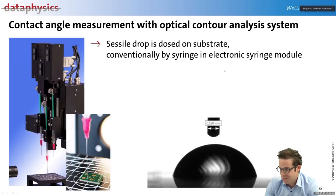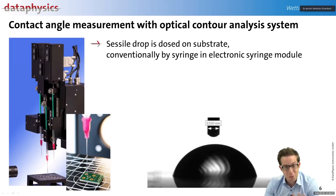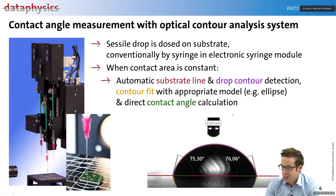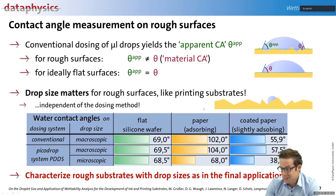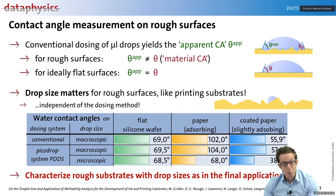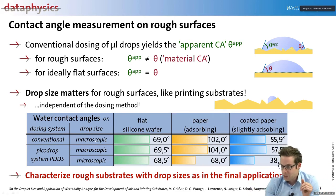If volumes do not matter, you can generate a drop with a syringe, find the contour, find the drop shape, and get the contact angle. But there is a limitation. On a perfectly flat surface like a silicon wafer, no matter how big the drop, you always measure exactly the same contact angle — macroscopic or microscopic drops on a silicon wafer, the contact angle for water is always the same.